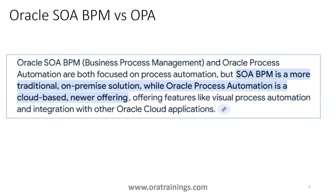Is OPA a new product? Not really. From the past couple of years we had Oracle SOA BPM, which was an on-premise orchestration mechanism. Later we had Process Cloud Service, which was replaced with OPA — Oracle Process Automation. It's a PaaS solution from Oracle. Unlike SOA BPM, which was on-premise, OPA is a cloud-based solution and the tooling is different. It also has very good integration with other products.